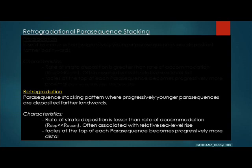Retrogradation, in the other sense, is more like the opposite of progradation. It is a stacking pattern where we have progressively younger parasequences deposited further landwards. The key characteristic of the retrogradational stacking pattern is that strata deposition occurs at a rate that is lesser than the rate at which accommodation is formed. That means we have lesser sediments coming from the land into the sea than the amount of space available for those sediments to occupy.